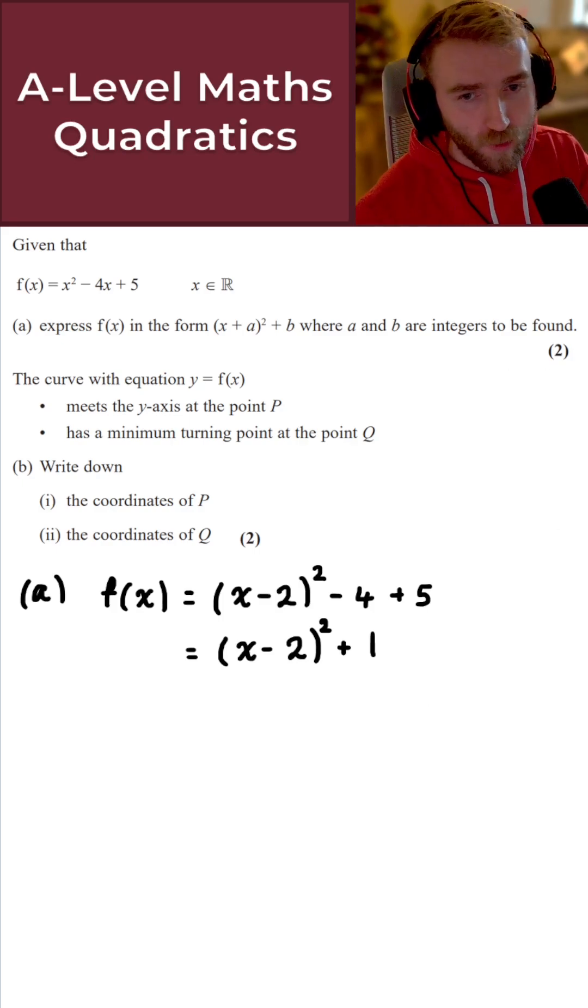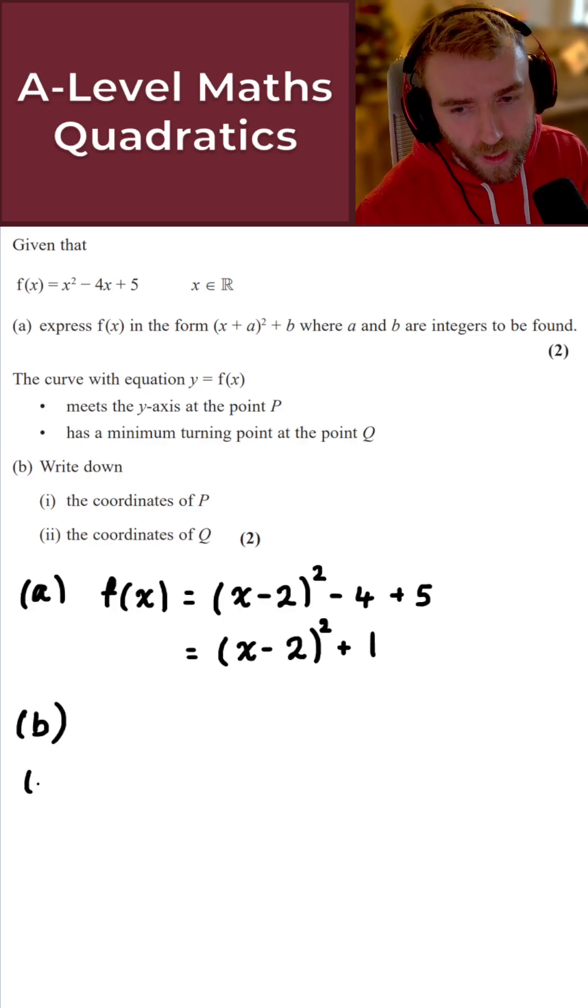We then saw that the curve with equation y equals f of x meets the y-axis at the point P and has a minimum turning point at the point Q. So for part b then, we want to write down the following coordinates here. So for b part 1 then, nice and easy then.